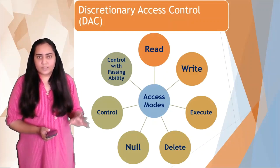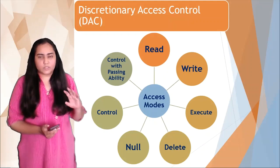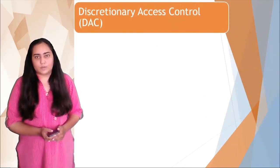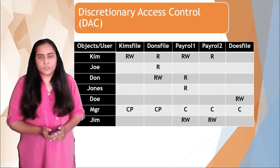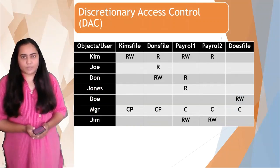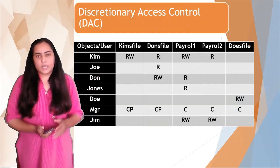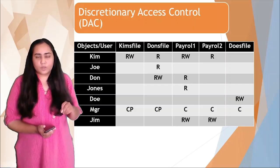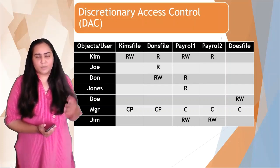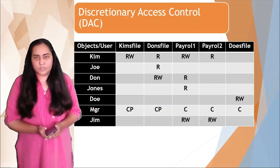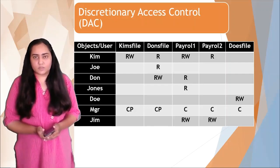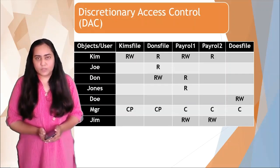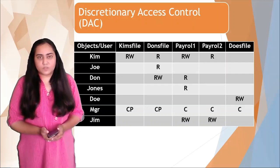To handle all these modes, different tables are created which are known as the access control matrix. The access control matrix shows you which user has access to which file and with what type of mode. Some places it's written RW, which means read and write. Then there is C, which means control, and CP, which means control with passing ability. That's how this type of matrix is created.